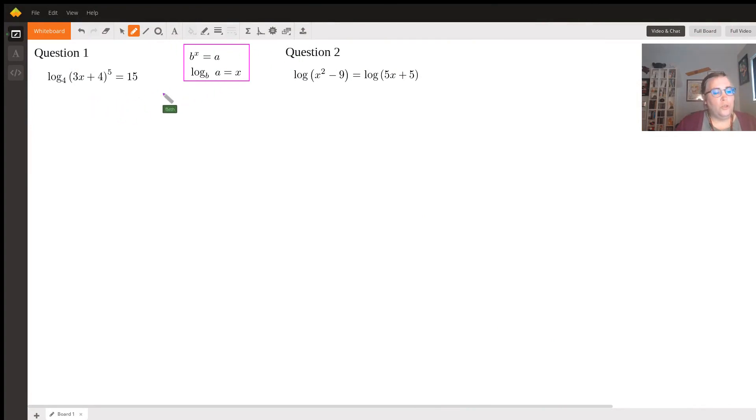Hello. So you had two questions, both involving logarithms. The first one, we have log base 4 of quantity (3x + 4) to the fifth power equals 15. And the other one is logarithm base 10 of x squared minus 9 equals logarithm of 5x plus 5.